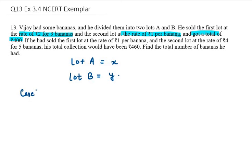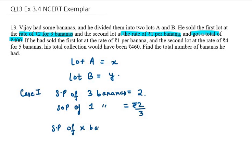Let's write: selling price of 3 bananas from lot A is ₹2. If we talk about selling price of 1 banana, 1 banana will be ₹2/3. So selling price of x bananas will be 2/3 times x. This is my selling price of x bananas.